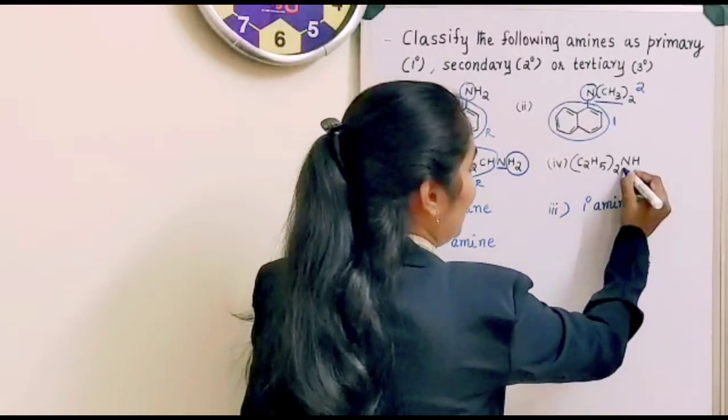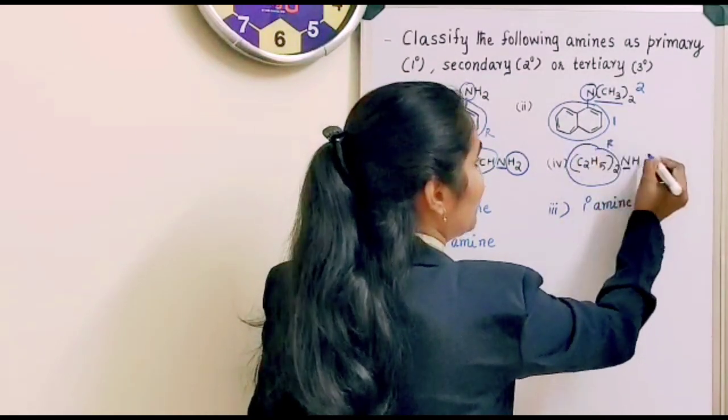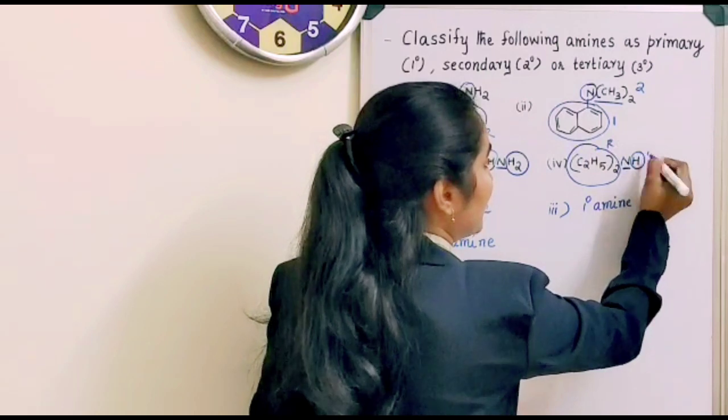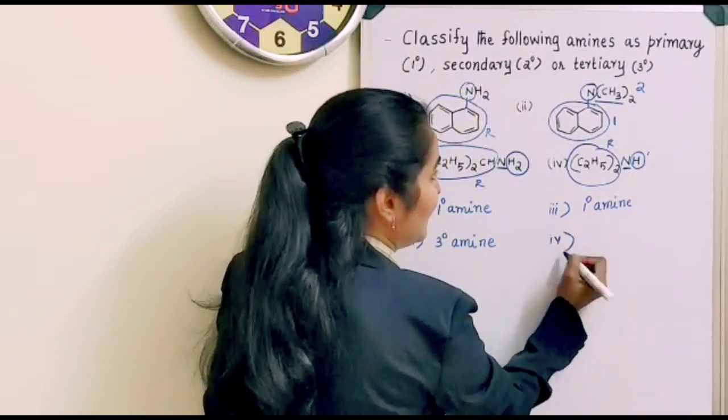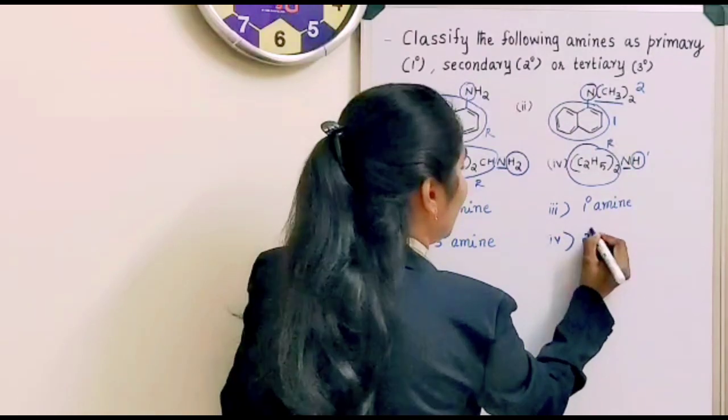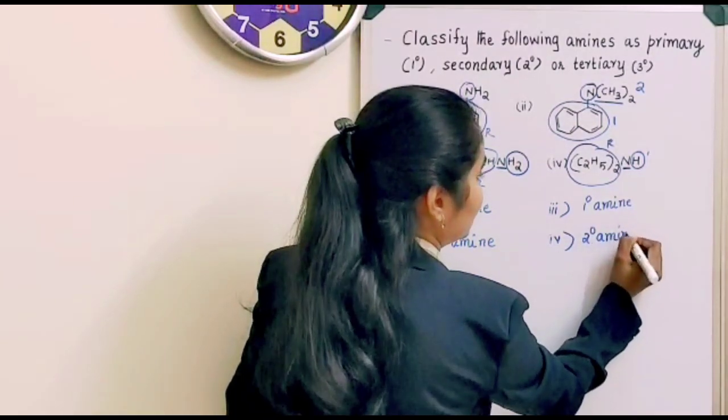And now this one. Here we have this nitrogen and we have two R here. Two R group and one hydrogen here. And in that case, that is going to be a secondary amine.